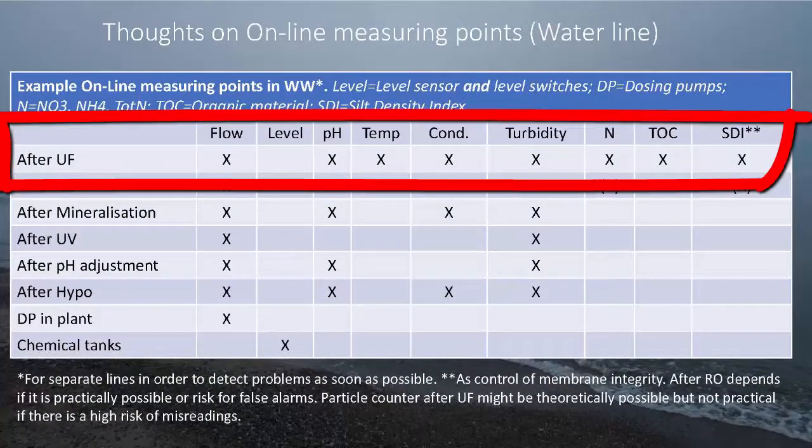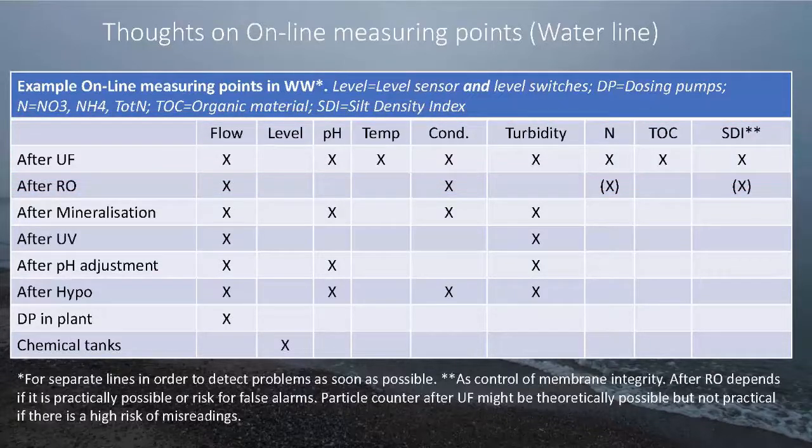After the UF I would check the flow, the pH, the water temperature, conductivity, turbidity, nitrogen, organic material and also maybe SDI silt density index. So a number of online measurements but this is our first good barrier. So here we need to have good control over what's coming out of it.